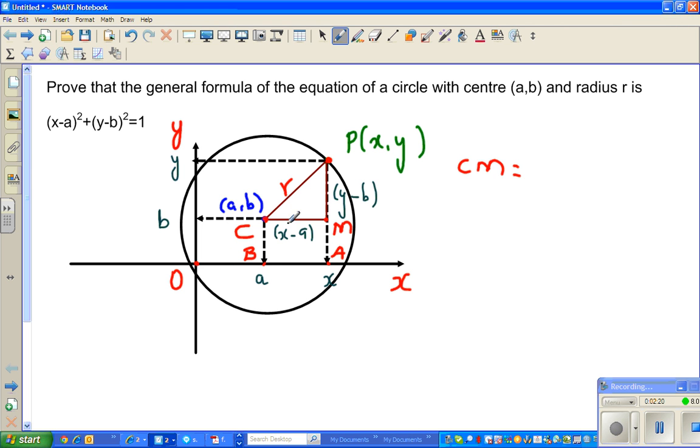So can I say CM is OA minus OB. We know O is, so we can say CM is x minus a.